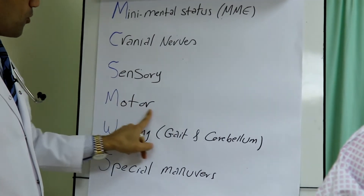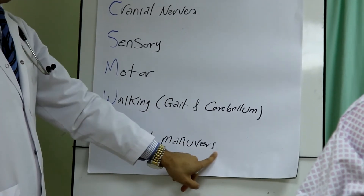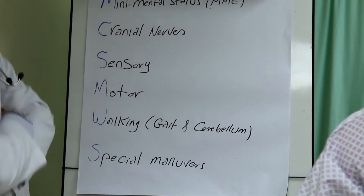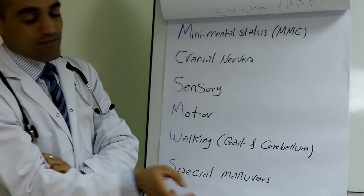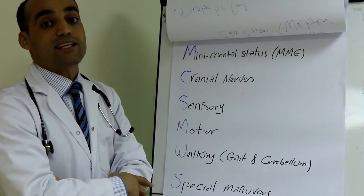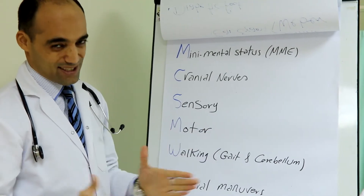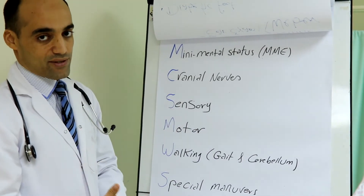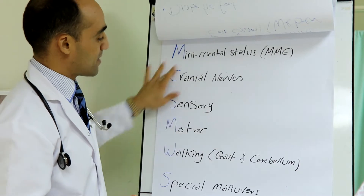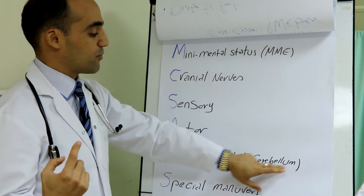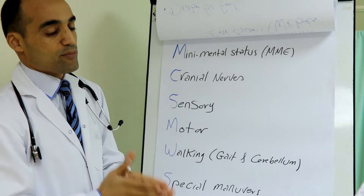The mnemonic continues: sensory, motor, walking means gait and the cerebellum, and special maneuvers. For a complete neurological examination it would take more than 10 minutes, so we compress it. The basics I recommend are cranial nerves, sensory, motor, and one test only for the cerebellum. Please don't do the Mini Mental Status Exam unless memory is affected.